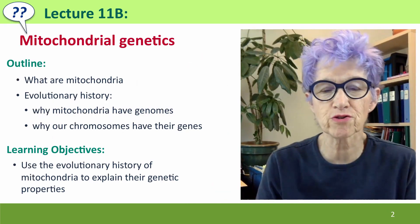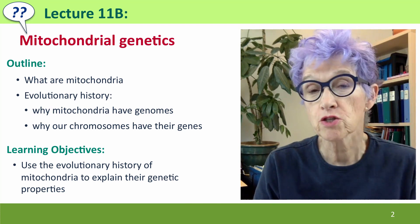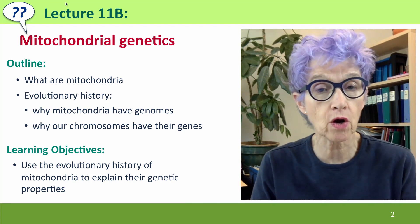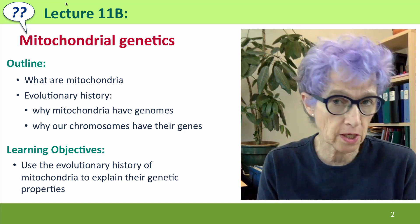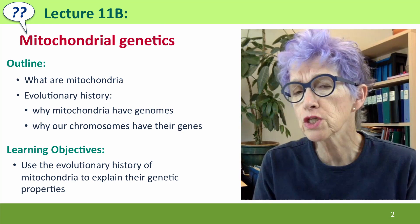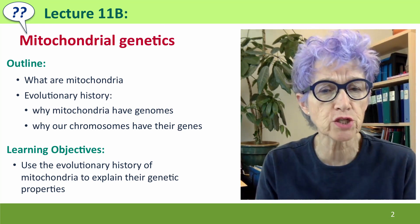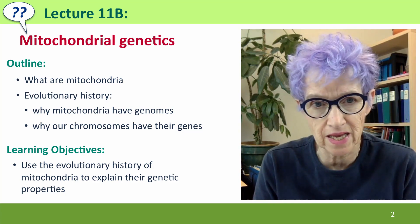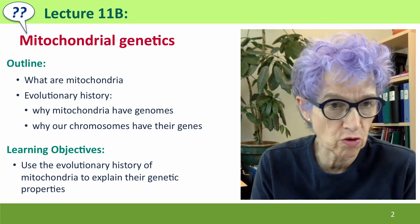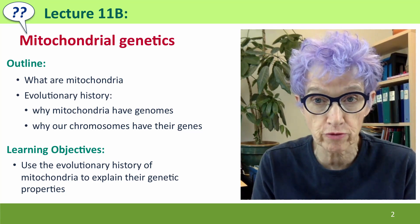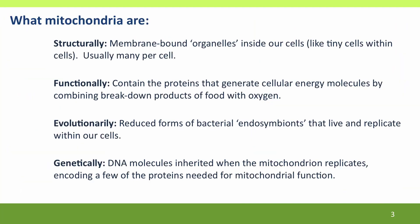Hi everyone, welcome back to lecture 11b of Useful Genetics. This is the first of two lectures where we're going to be talking about mitochondrial genetics. In this lecture we'll talk about what mitochondria are, and we'll use a description of their evolutionary history to make sense of why mitochondria have DNA and why our chromosomes have so many genes that came from mitochondria.